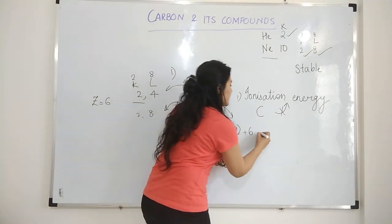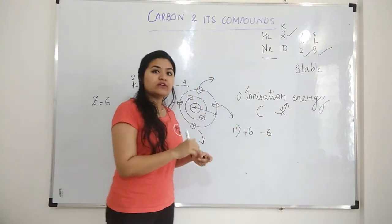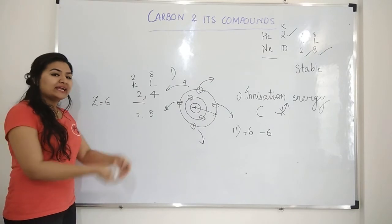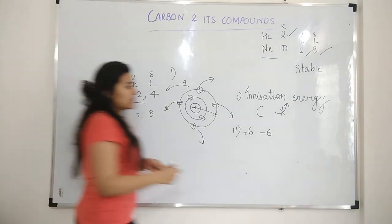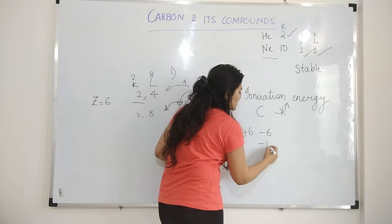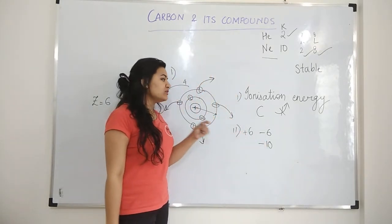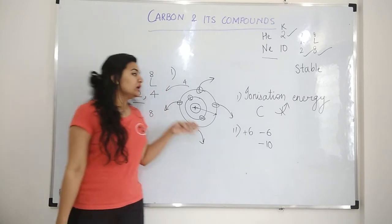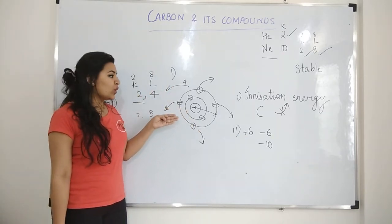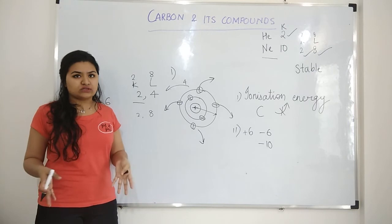And total electrons are also six. Now if it wants to be stable by taking in four electrons, total number of electrons will be ten. Now it is very difficult for six protons or the nucleus with six protons to hold up to ten electrons.